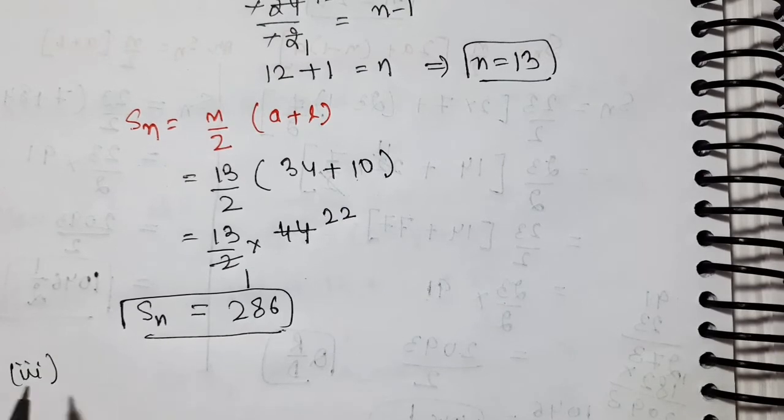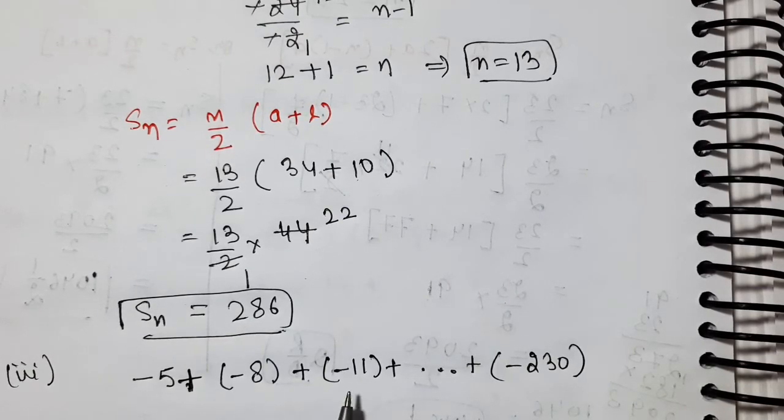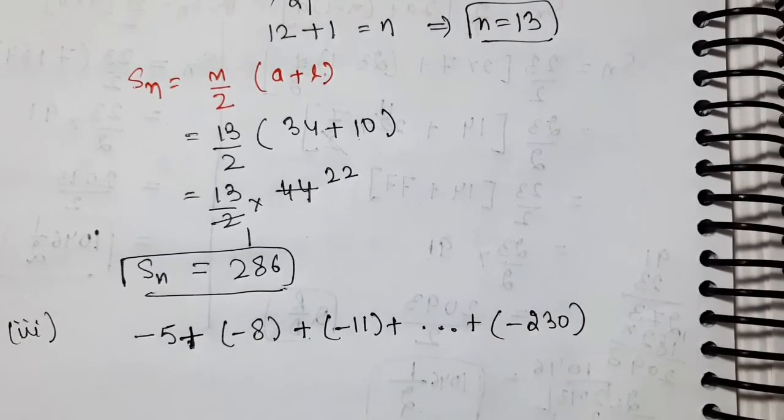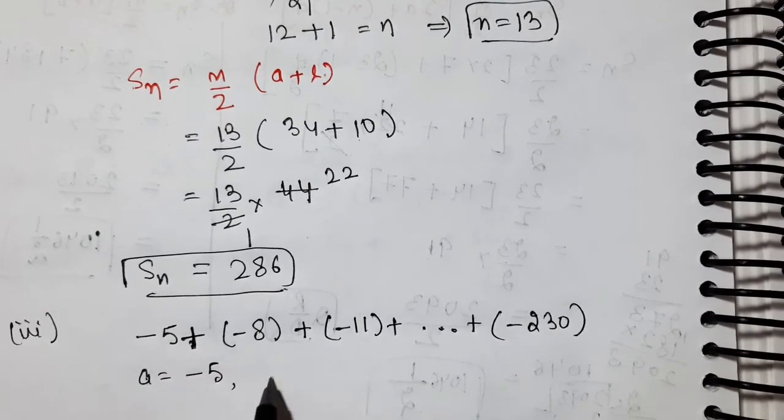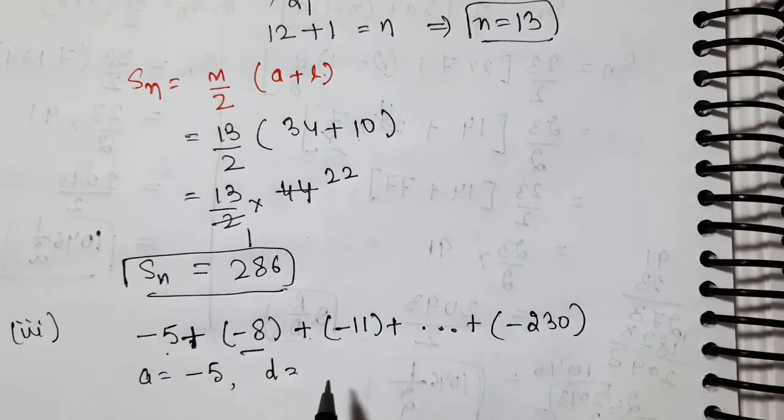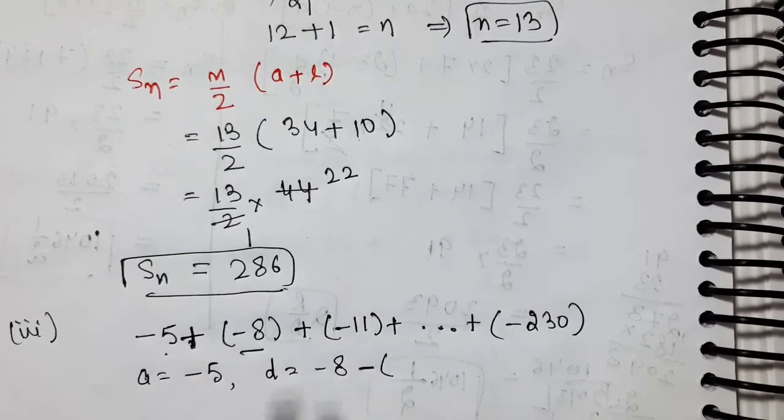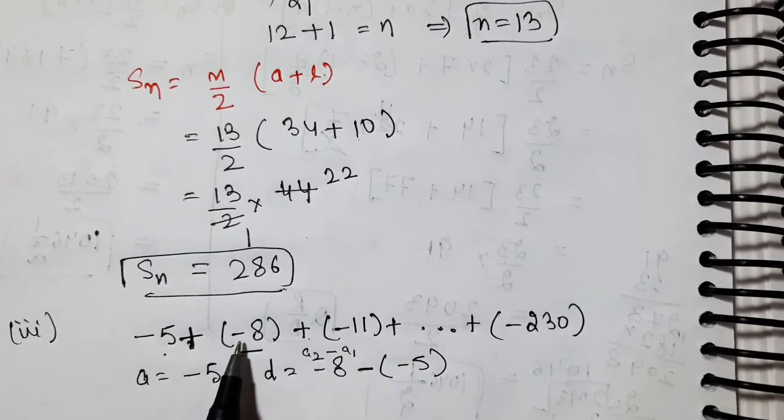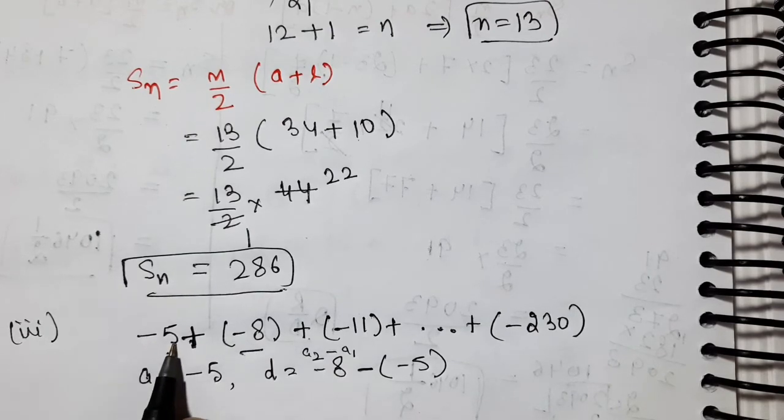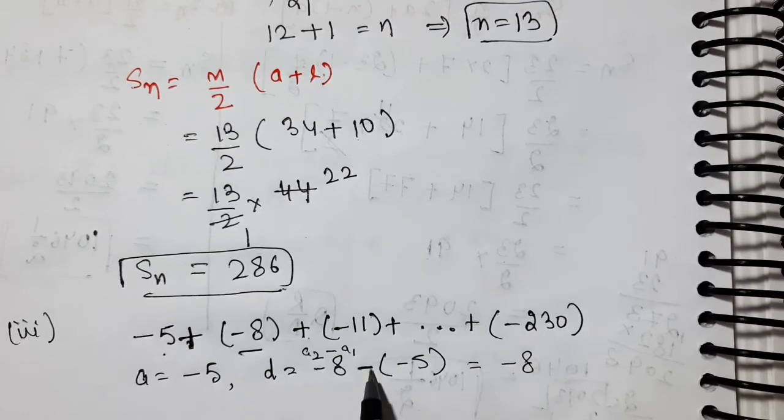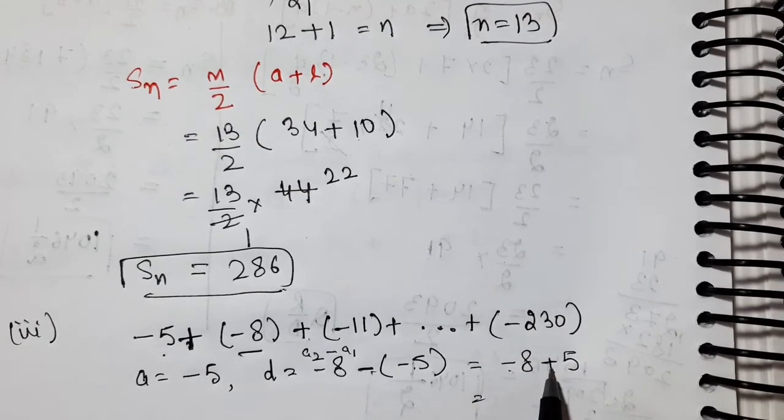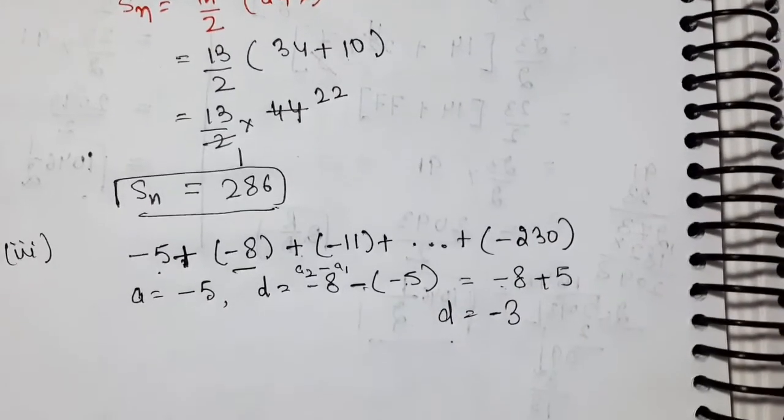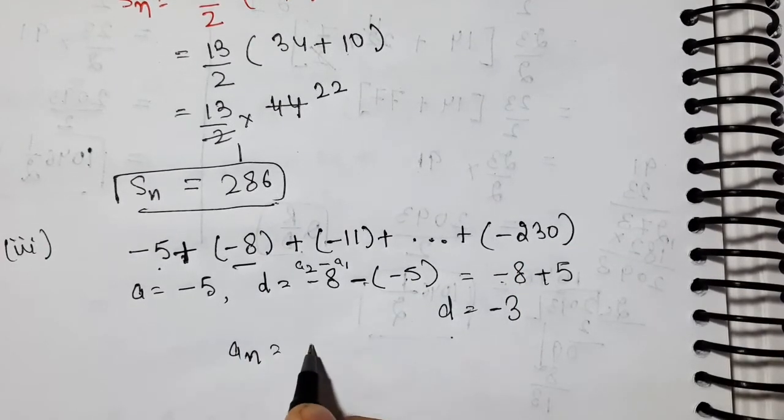Second part is 34 plus 32 plus 30 and so on plus 10. So this is first term, second term, third term, and this is nth term. Just like we did the first question, we'll do it the same way. We didn't know which number this term is at, so we took it as nth term. Now write everything that is given. First term is 34. Common difference d is second term minus first term, so 32 minus 34.